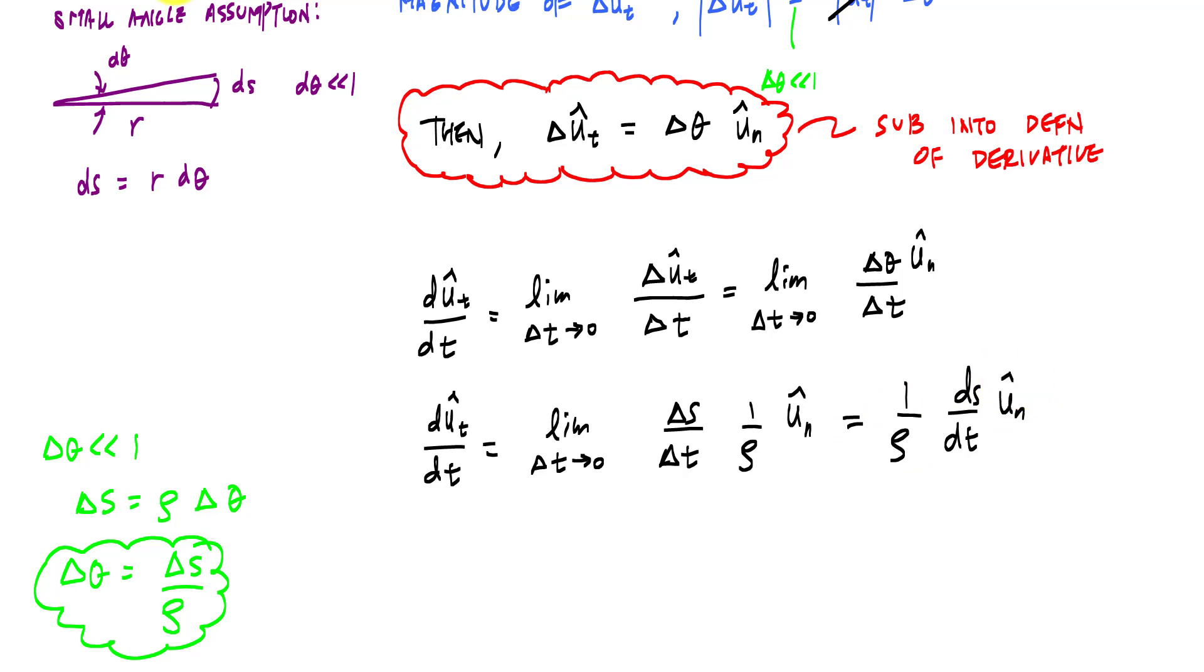then I will get delta t. And this would be 1 over rho times ds/dt u_n hat. What is ds/dt? It is the speed here. This would tell us last but not least.